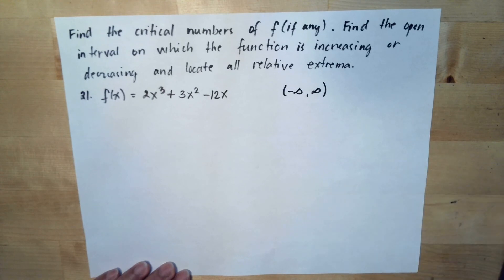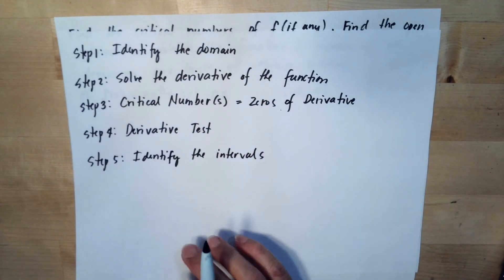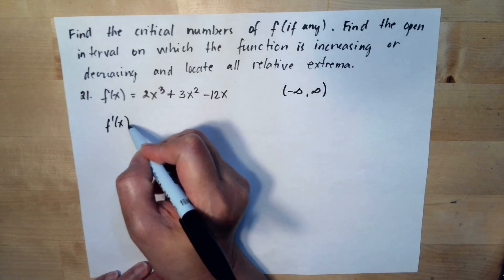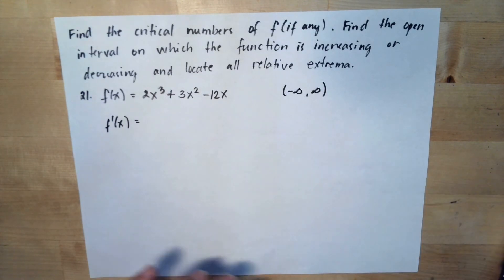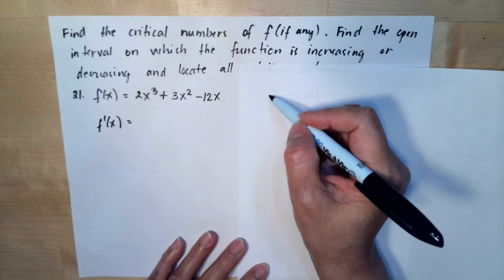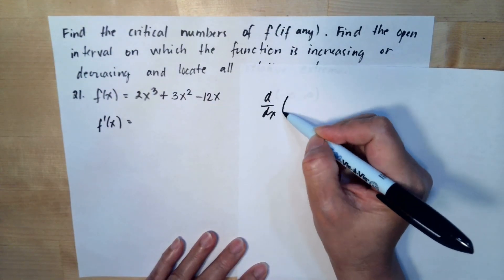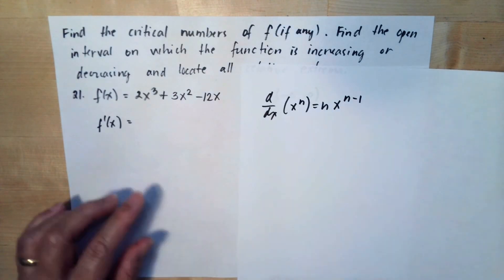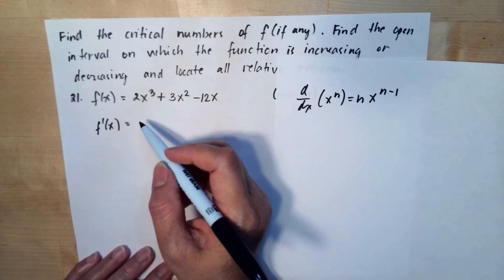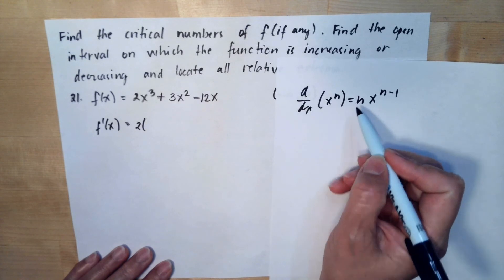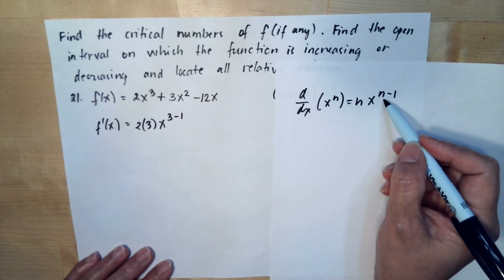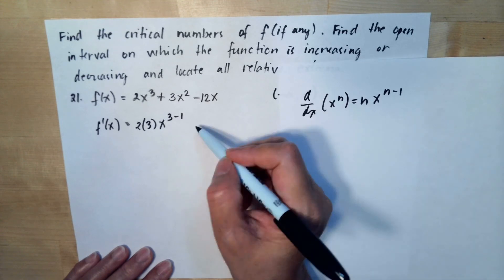Next, we need to find the derivative of the function. We apply the power rule: d/dx of x to the n equals n times x to the n minus 1. So we get 2 times 3, then x to the 3 minus 1.